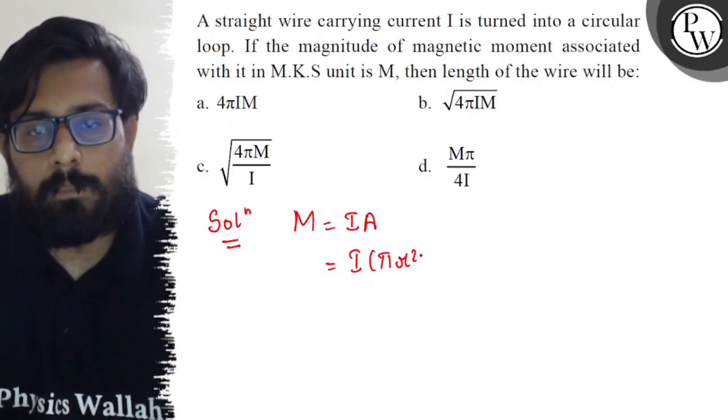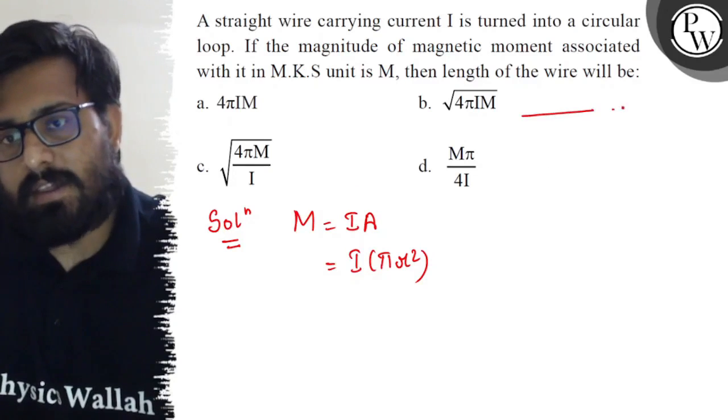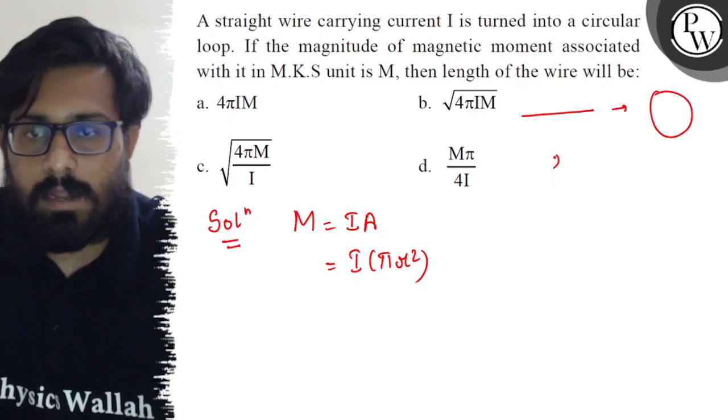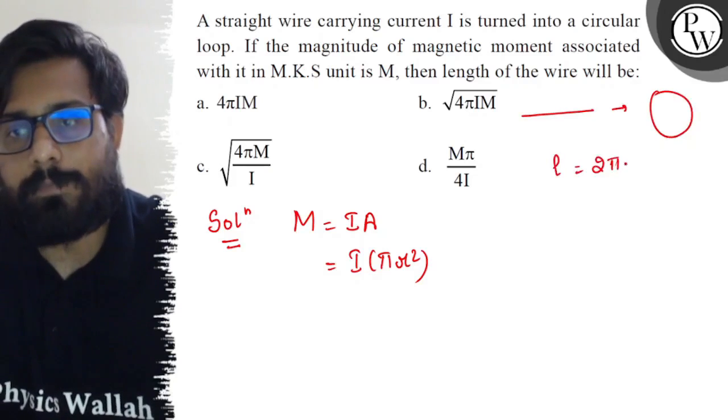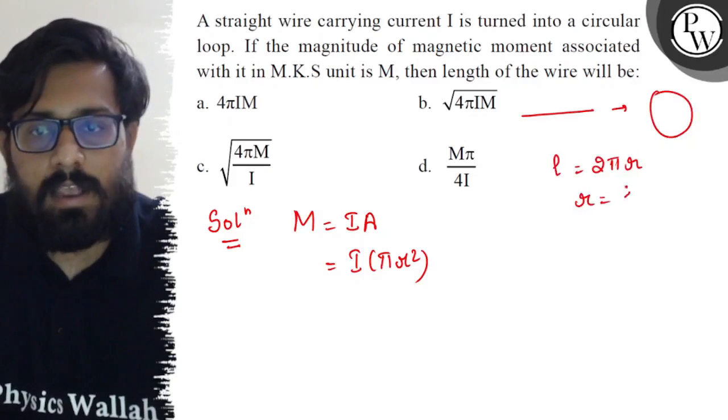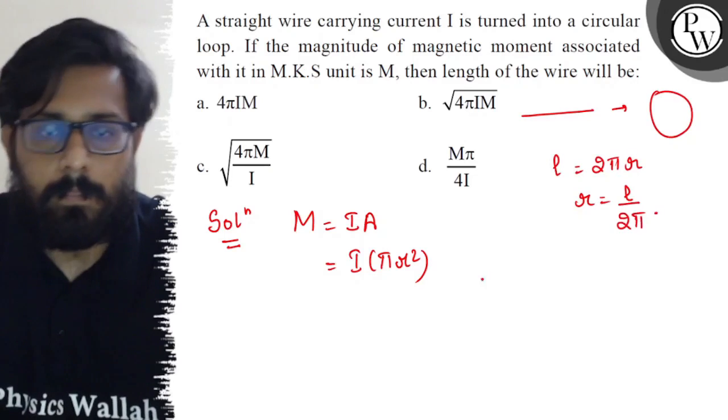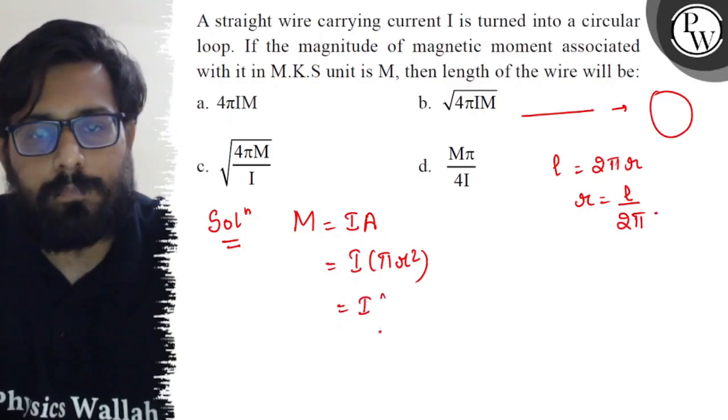Now since the straight wire is converted into a circular loop, so the length is equal to nothing but 2πr. So r can be written as L/2π. Putting the values, I into π into r, which becomes L²/4π².